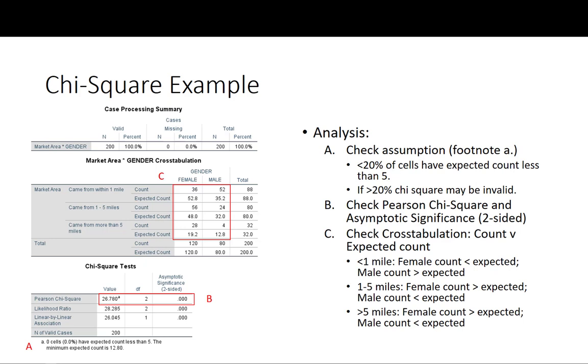In order to figure out in what direction this difference is occurring we look at our counts versus expected counts in the cross tabulation table. If you look at females who came from one mile, the expected count is 52.8 but the actual count is 36 which is much lower than expected. From 1 to 5 miles the count was 56, the expected count was 48. So we have more people coming from 1 to 5 miles than expected. From more than 5 miles we have 28 actual count and expected count was only 19. So again we have more females coming further than expected.